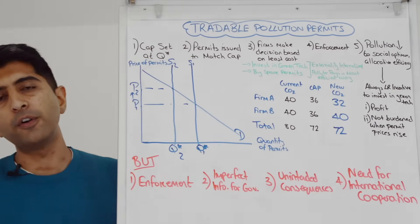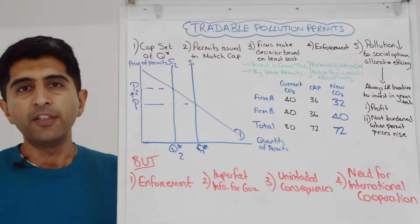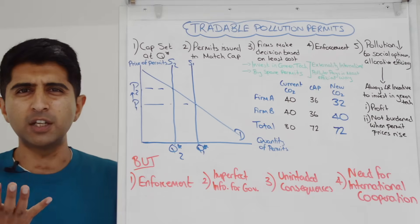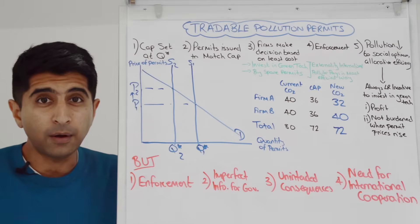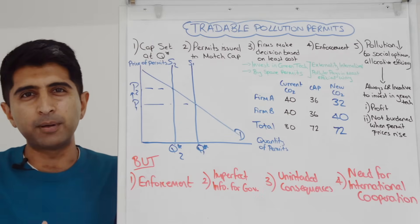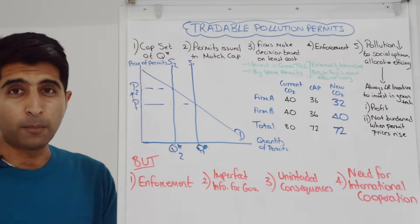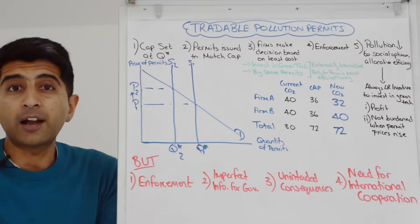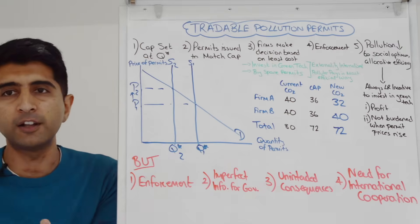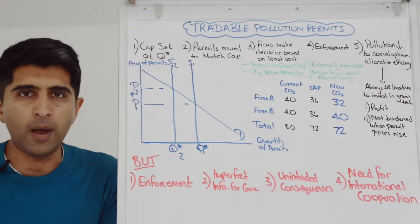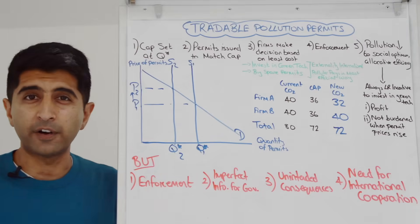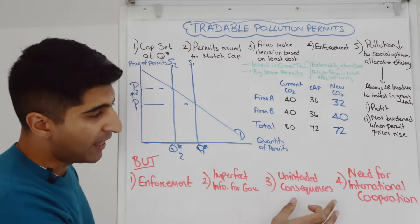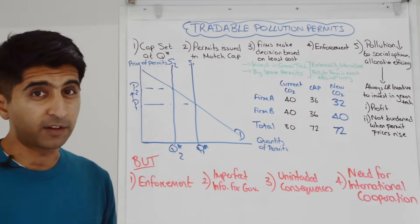There are unintended consequences because regardless of the choice firms make, this policy increases costs of production. If it's very strict, the cost increase is drastic — firms could shut down, which is not intended. They could also leave the country and pollute elsewhere, moving to countries where policies are more lax or don't exist at all, resulting in carbon leakage — CO2 emissions simply moving from one part of the world to another. Or firms pass on higher costs via higher prices to consumers, burdening consumers and potentially being inflationary. If these consequences are severe, there is a risk of government failure.